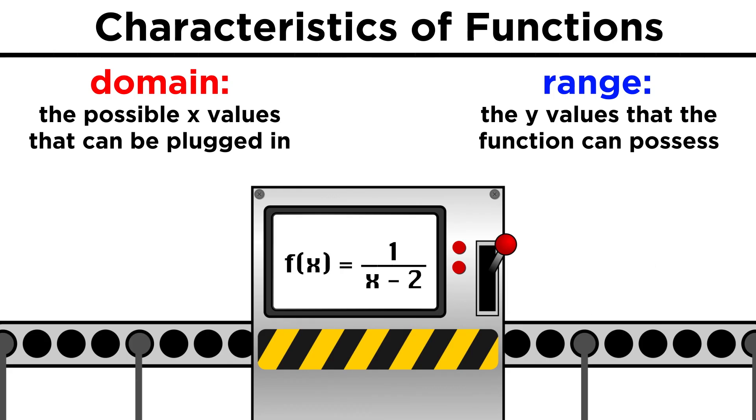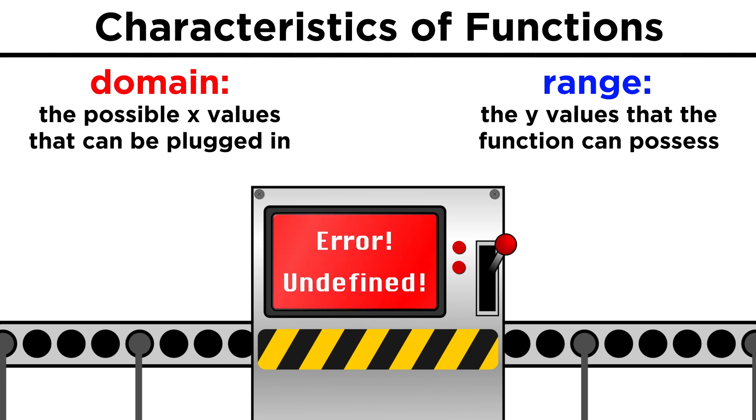But there are examples where there are limitations to the domain. Let's say f of x equals one over x minus two. We can't divide something by zero, so x can't be two. If x was two, we would get zero on the bottom, and the function would be undefined, so two is not part of the domain.